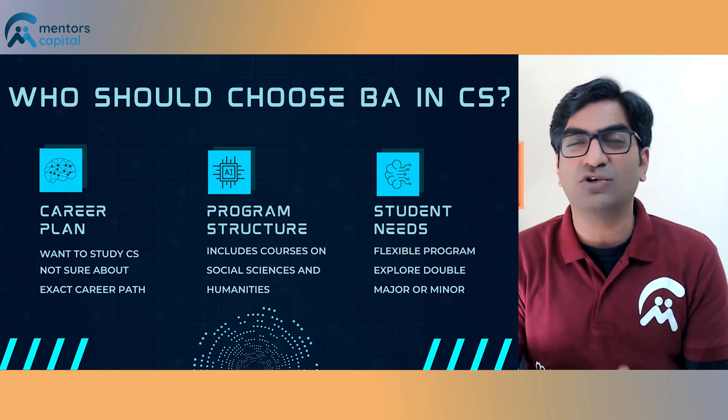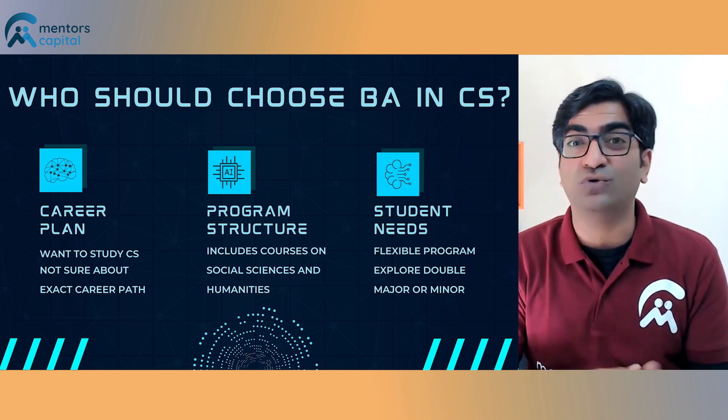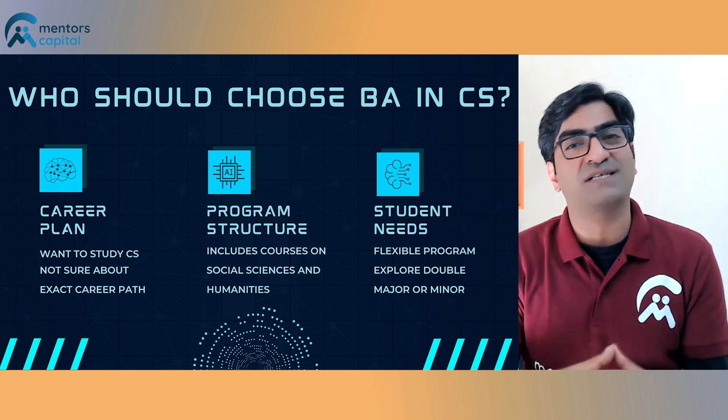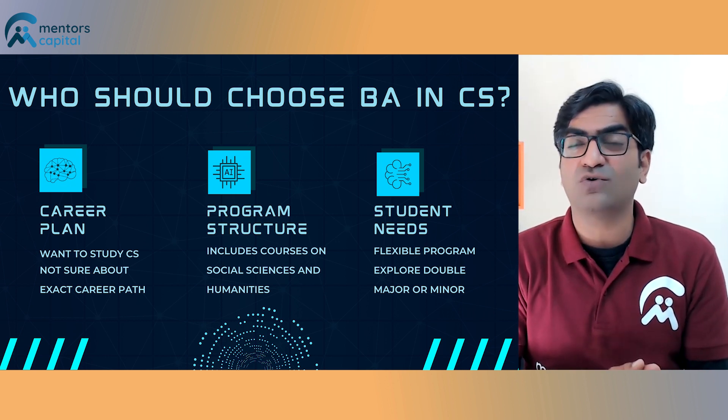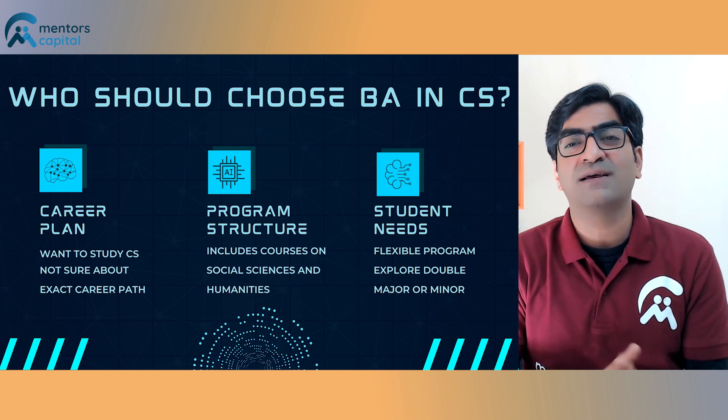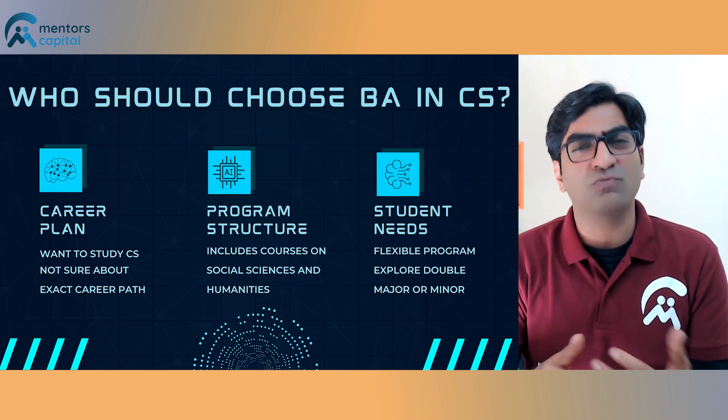In terms of a career plan, choose a BA in computer science if you're sure about computer science as a field you want to study, however you're not exactly sure about what you will do in this field — the exact kind of role or specialization you'd like to pursue. If you're not sure about an exact career path, then a Bachelor of Arts is probably something you should choose, because the program structure of a BA includes basic computer science courses but also includes plenty of courses on humanities and social sciences that you can explore in your undergraduate program.